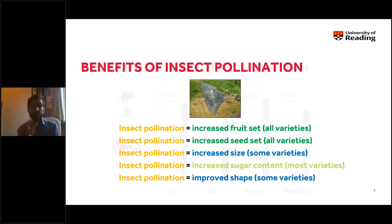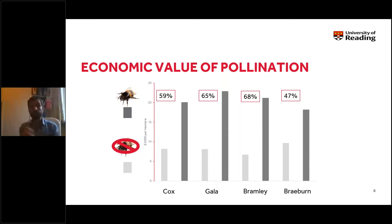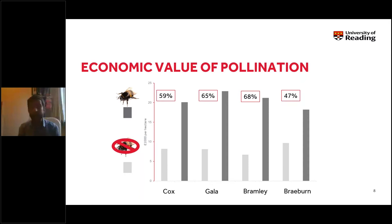Taking these data and looking at the contribution of insect pollinators to apple yield and quality, we estimated the economic contribution insect pollinators are currently making to common important UK apple varieties. The output from orchards when pollinators are excluded is significantly reduced — more than £10,000 per hectare in all four varieties studied — compared to orchards with normal levels of insect pollination. We do see some variation in this level of dependence between varieties.